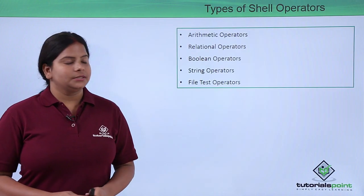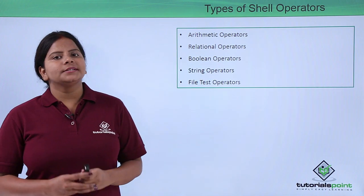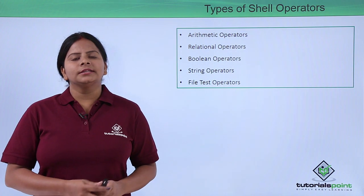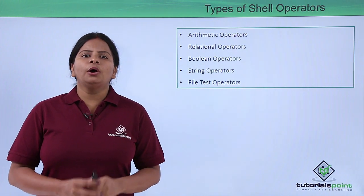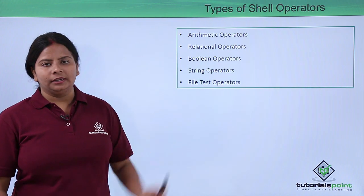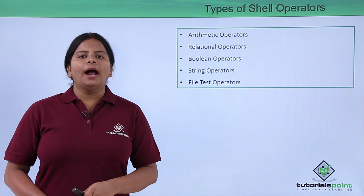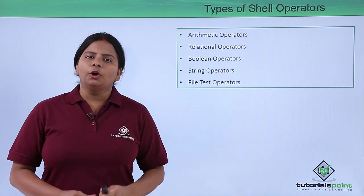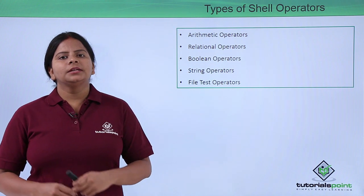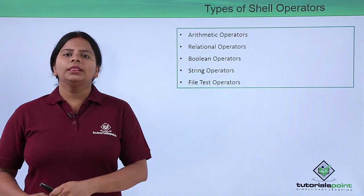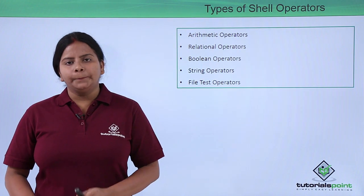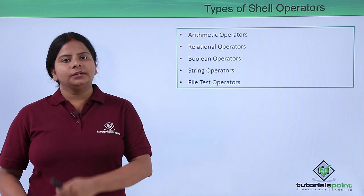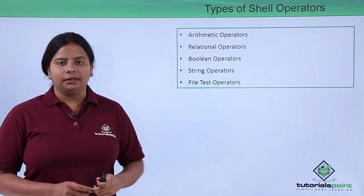We have five categories. The very first is called arithmetic operators. As discussed, we can use addition, subtraction, and multiplication signs — these are all called arithmetic operators. For programming, if I want to add two different numbers, I can use the arithmetic operators by giving the first variable plus the second variable, that is a plus b. So operators where we use plus, subtraction, division, and multiplication signs are called arithmetic operators.